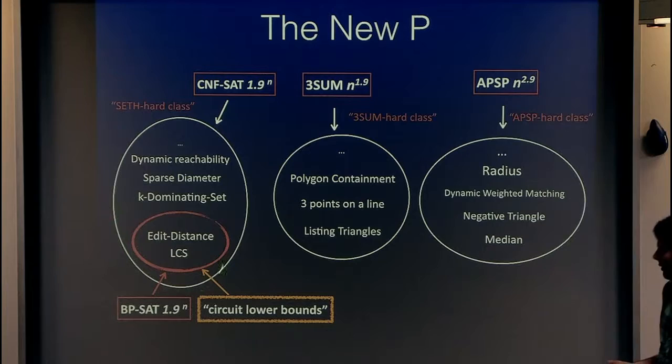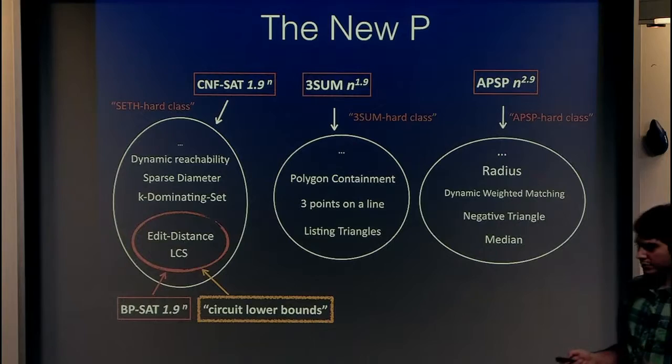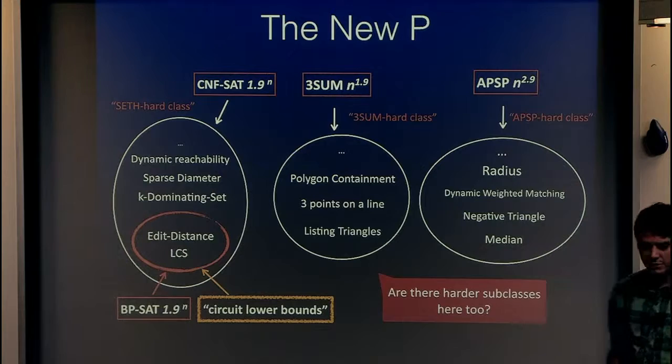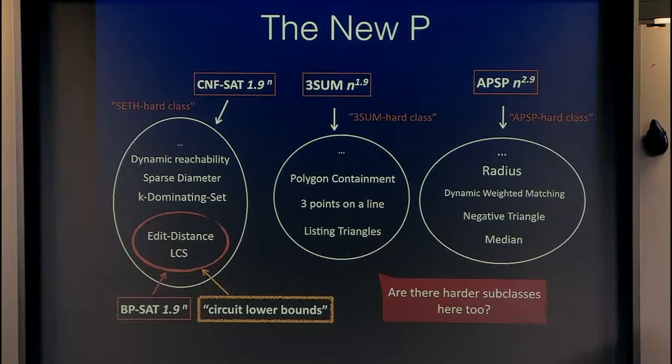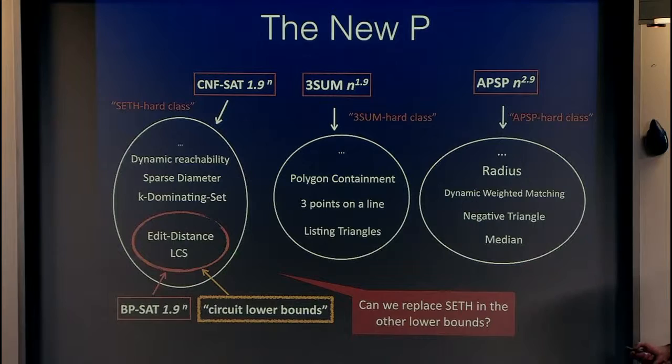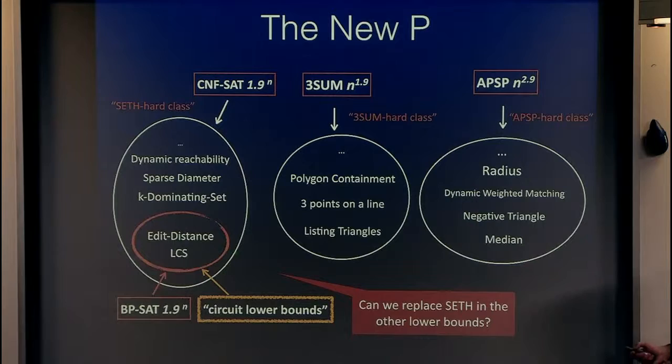In summary: we showed that in the strong ETH class there's a harder subclass — you can base it on a better conjecture, the branching program ETH — and this has implications for circuit lower bounds. Interesting open questions: do other classes like the 3SUM class or the APSP class also have harder subclasses? And can we get better lower bounds for other problems currently in the strong ETH class? Thank you.